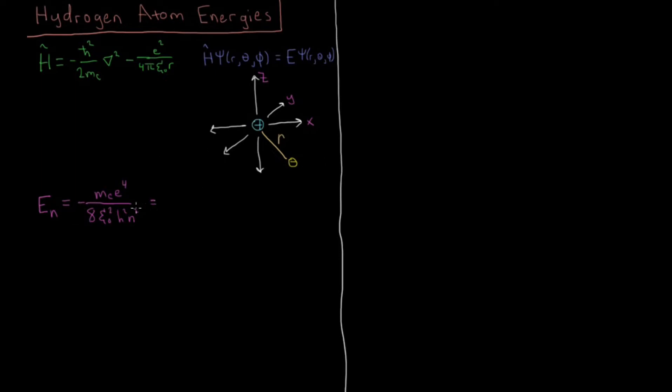And messing around with h and h-bar, we can also see that this would be equivalent to another form you might see this in, which is me e to the fourth over 32π² epsilon naught squared h-bar squared times n squared.